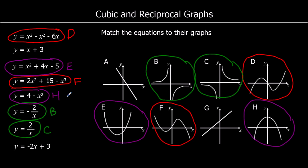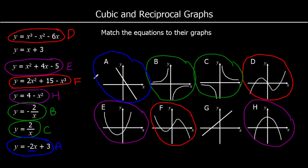Then we've got two straight lines left. The positive gradient graph goes up from bottom left to top right. The other has a negative gradient — as you go across it gets lower. The negative gradient is A, which is −2x + 3; the x term is negative so it's going down. G must be x + 3 — it's a positive straight line graph with a positive x term, so it's going up.